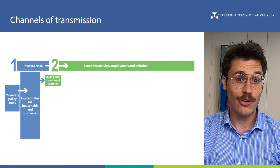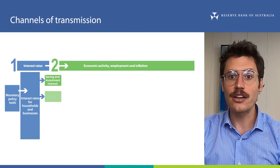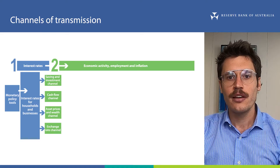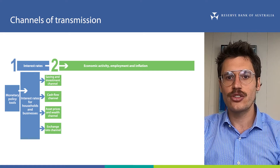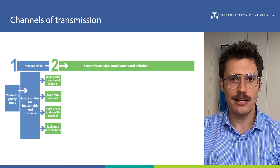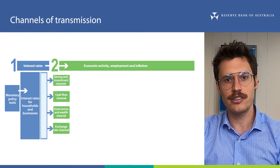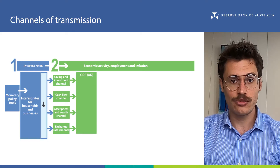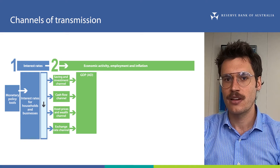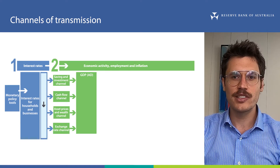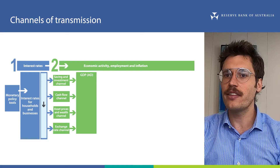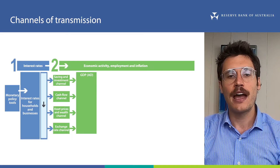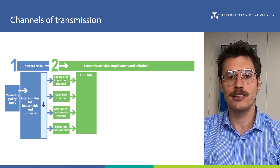We call these the saving and investment channel, the cash flow channel, the asset prices and wealth channel, and the exchange rate channel. In this video we will discuss how changes in these channels affect aggregate demand and GDP using the example of a decrease in interest rates. Of course, all else being equal, an increase in interest rates is expected to have the opposite effect. In the next video we'll discuss how changes in aggregate demand flow through to other indicators of performance in the Australian economy like employment and inflation, and also some other important considerations for monetary policy transmission.